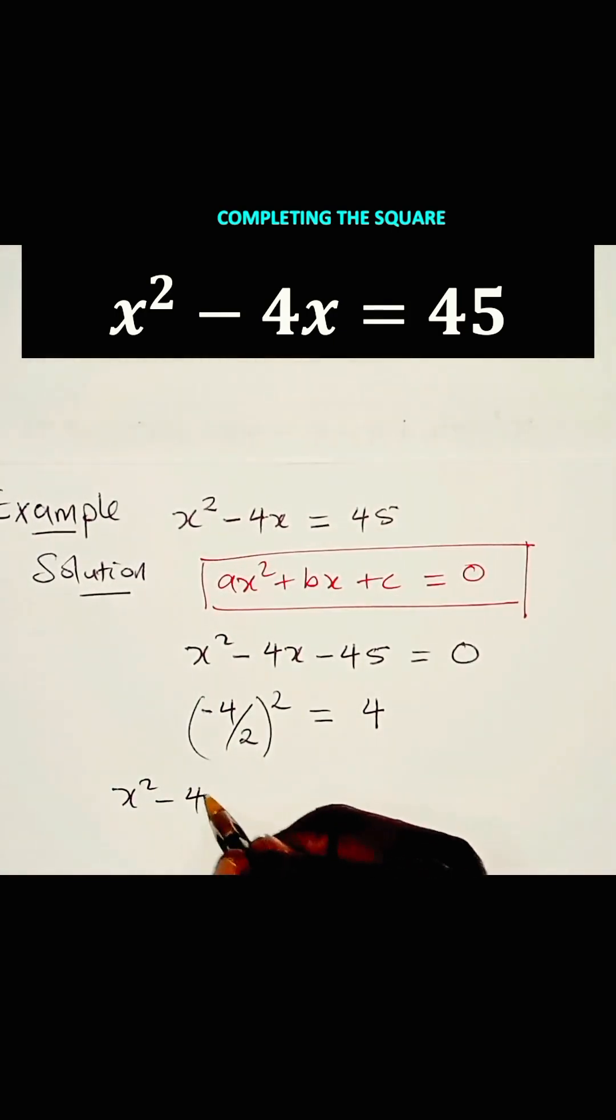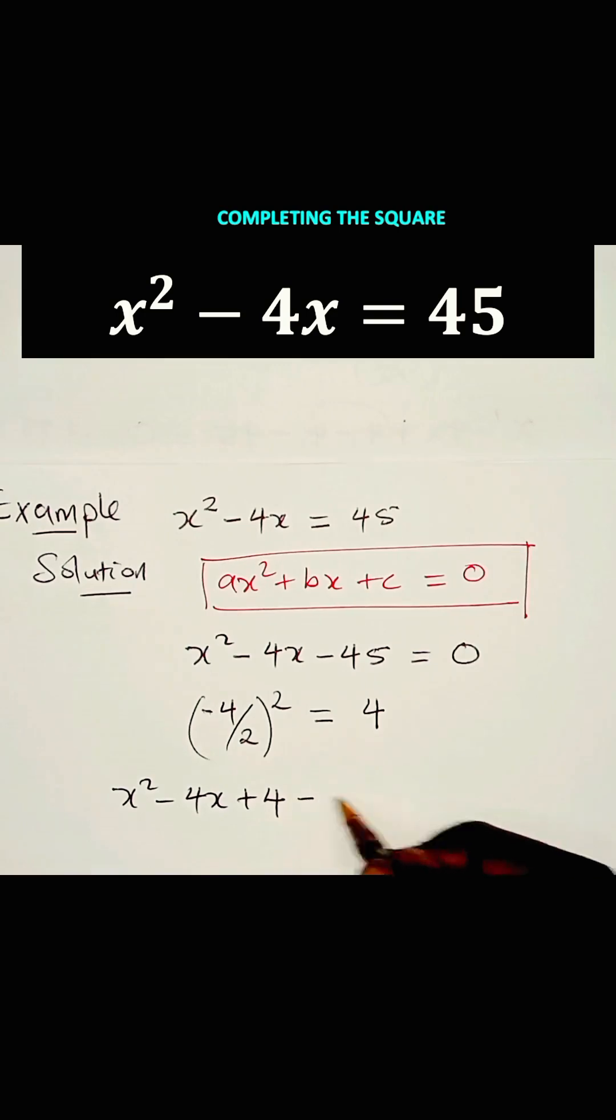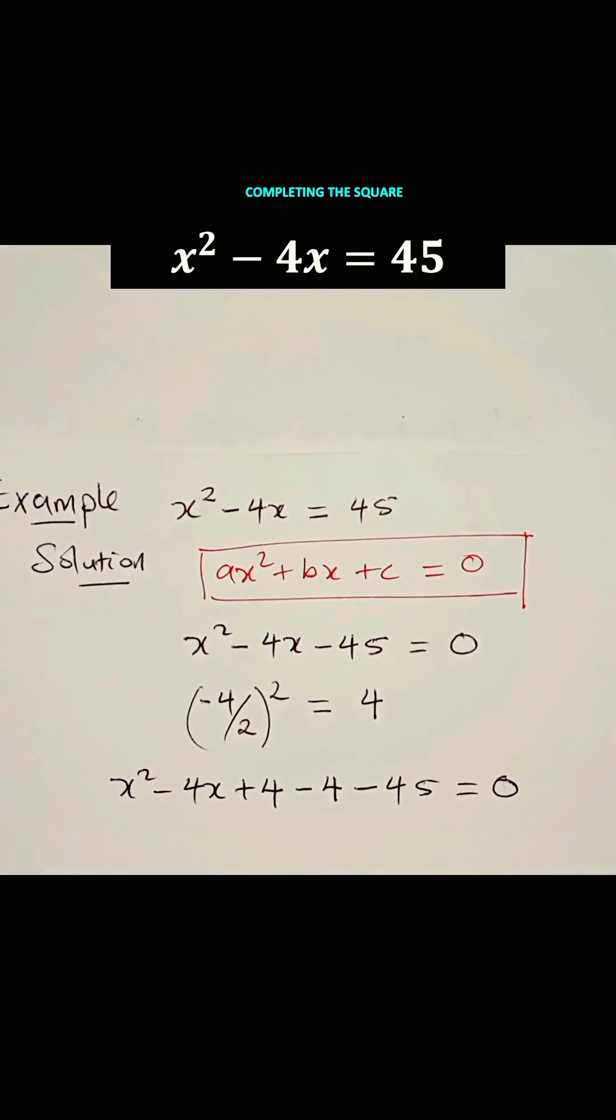Then we say X squared minus 4X plus 4 minus 4 minus 45 is equal to 0. This just gives us 0. We haven't changed the equation, but for the sake of completing the square, we have to do that.